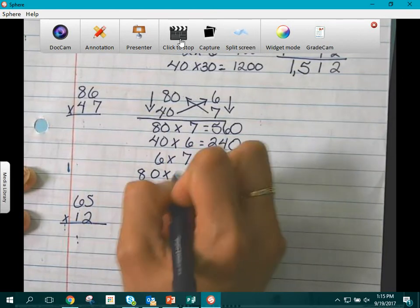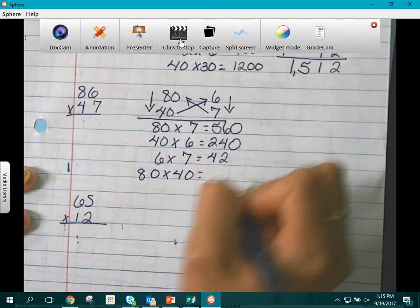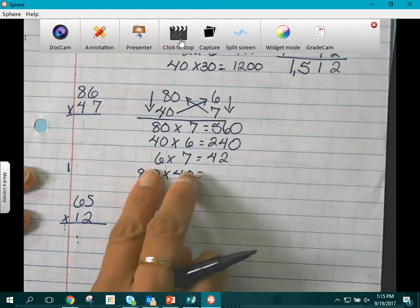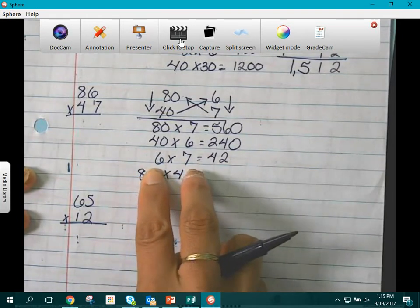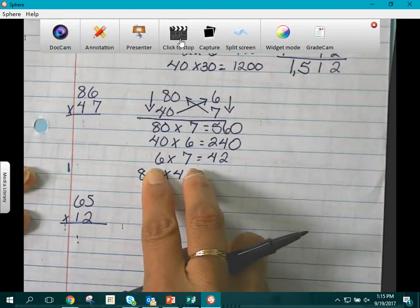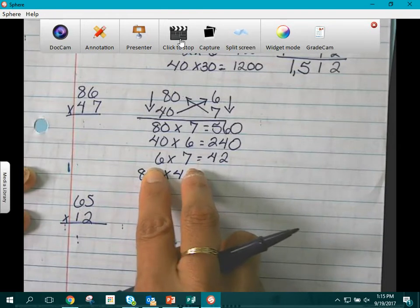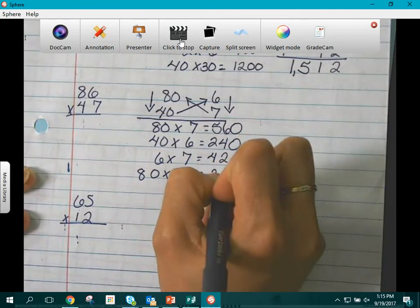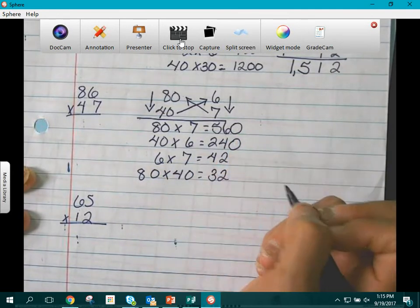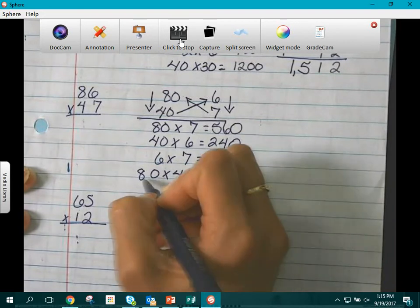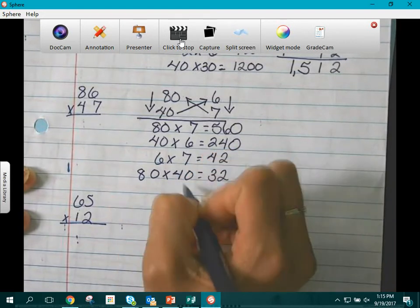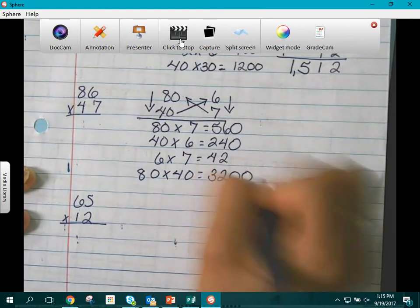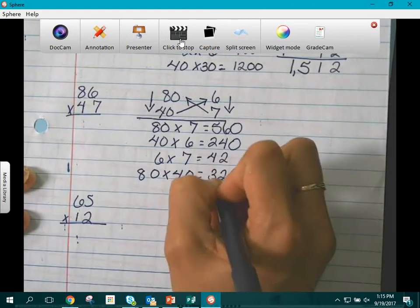And then we are going to take our final one. 80 times 40. When we multiply 8 times 4 alone, we don't look at the zeros first. We are going to just look at the first digit. So 8 times 4 is going to be 32. But the 8 is a value in the tenths place. And the 4 is a value in the tenths place. This is going to shift us over into the thousandth place value.